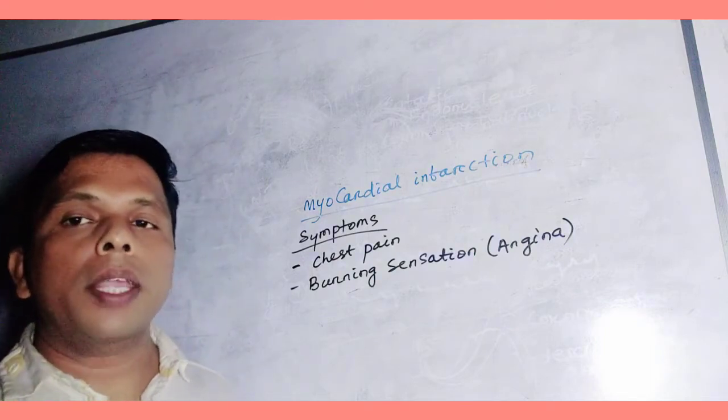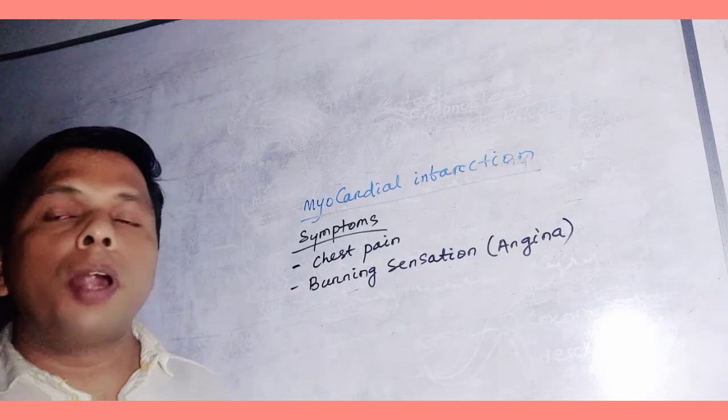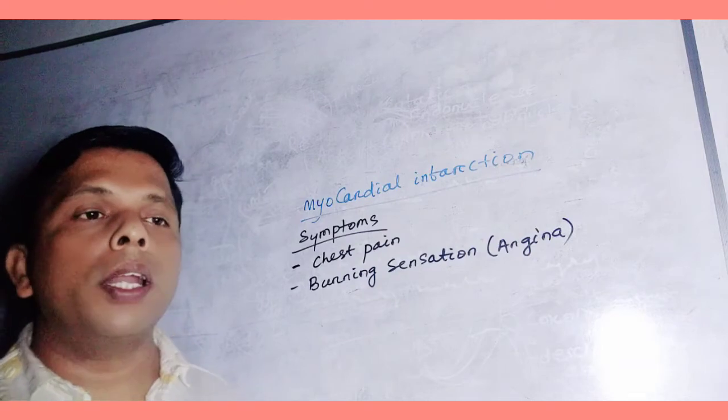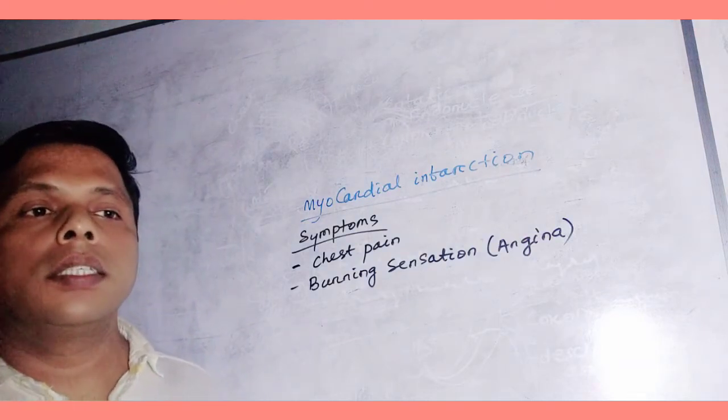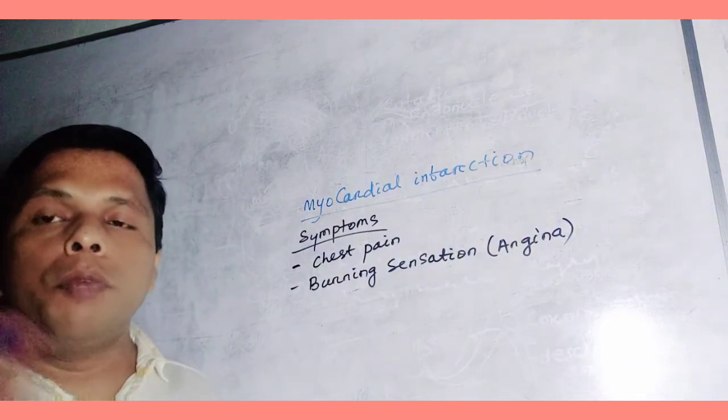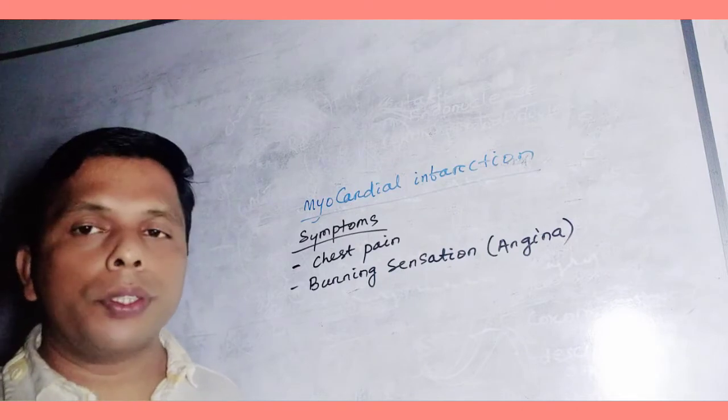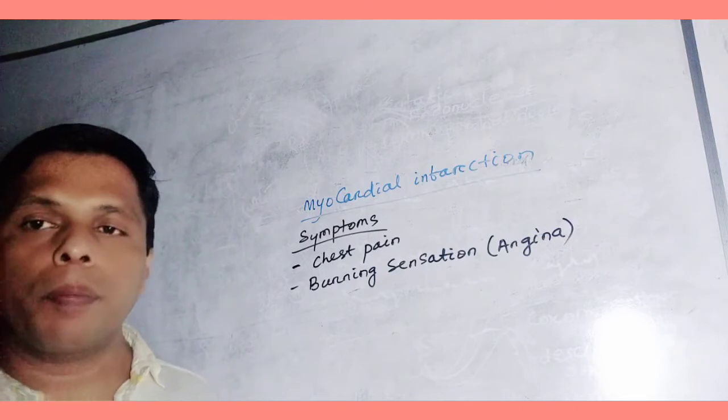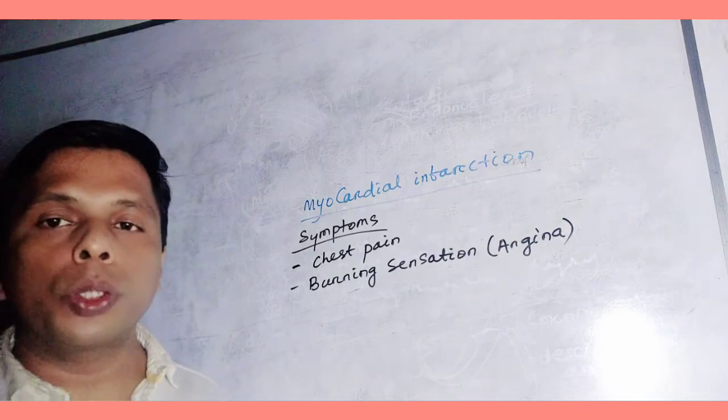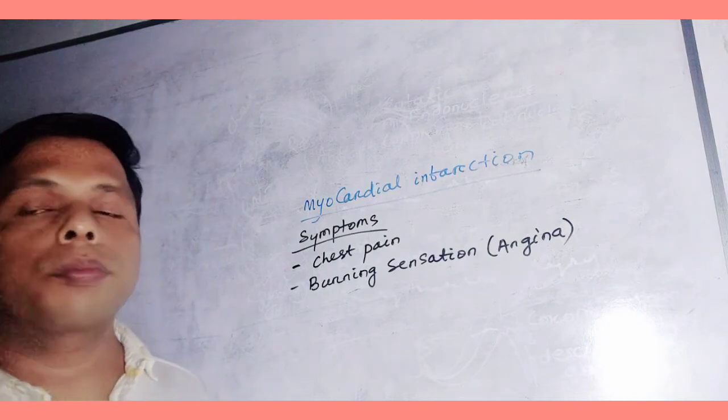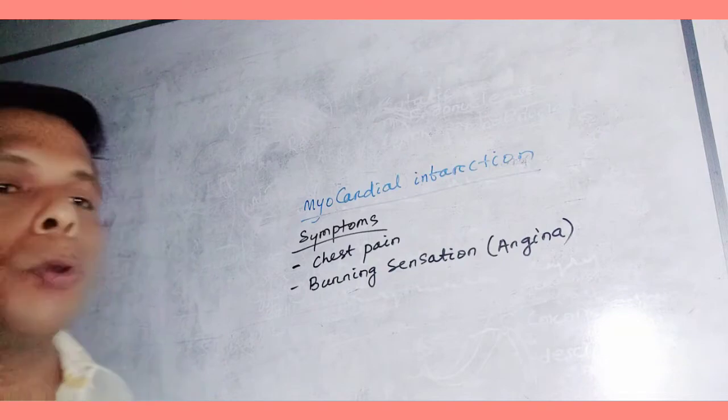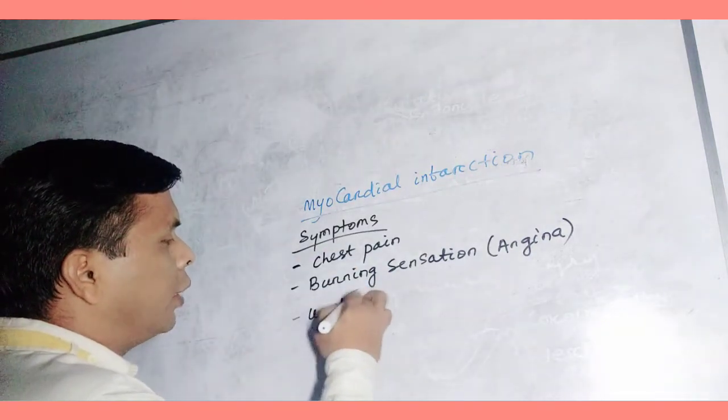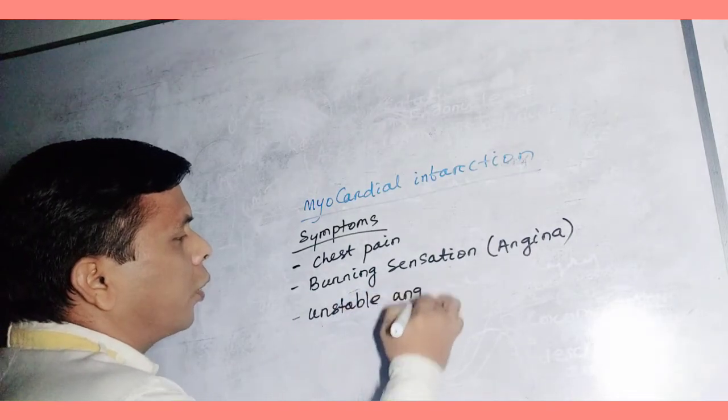It spreads to upper abdominal region, the lower jaw, even at the neck region, up to the arm pain. This is called angina. Another symptom: in moderate physical activity when we are doing some physical exercise or physical work, the pain also arises. The angina appears which is called unstable angina.